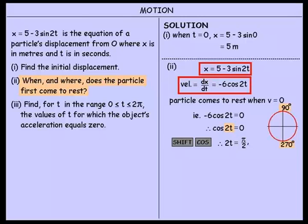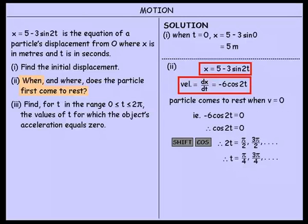The cos of 270 also equals 0, so that is a valid answer as well. 3π on 2 is the way of writing 270 degrees in radian measure. So 2t equals π on 2, then 3π on 2, and that continues. Dividing both by 2 to find t, the particle first comes to rest when t equals π on 4.